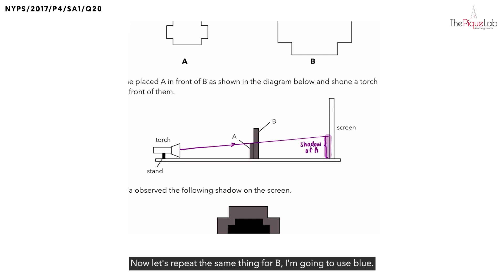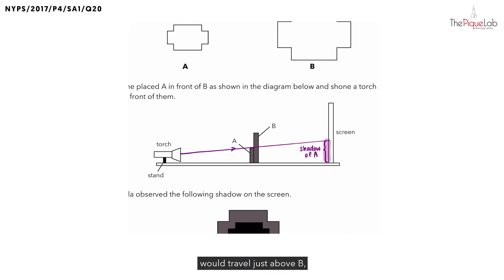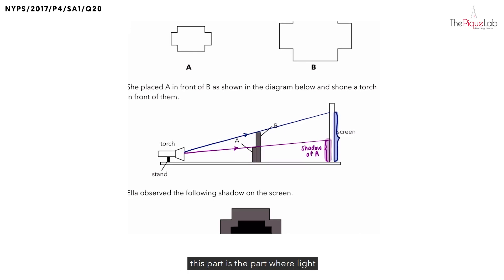Now let's repeat the same thing for B. I'm going to use blue. Same thing, how do we determine the size of the shadow of B? Light from the light source would travel just above B, so I'll start from the middle of the light source in order to reach the screen. That means any portion over here that I'm highlighting in blue, this part is the part where light from the light source is blocked by B. So this portion over here depicts the shadow of B.